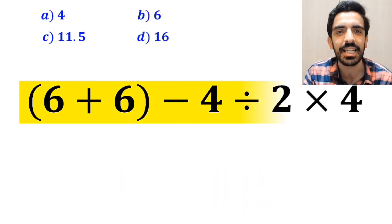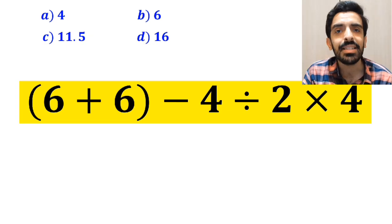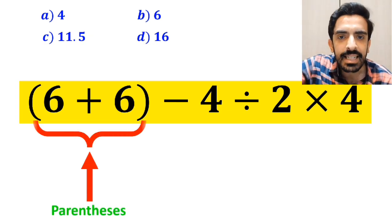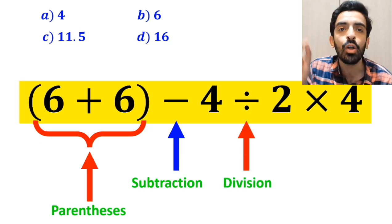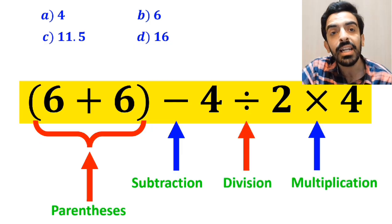Now, let me show you how to solve this expression properly. As you can see on the screen, in this expression, first we have a parenthesis, then a subtraction sign, followed by a division, and finally a multiplication.